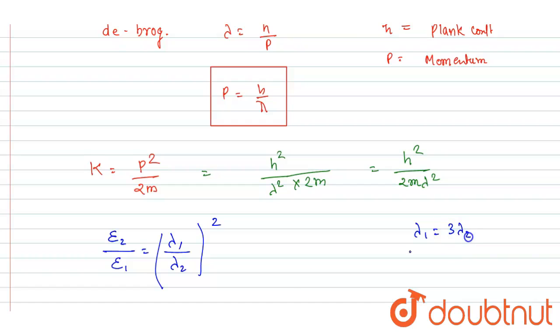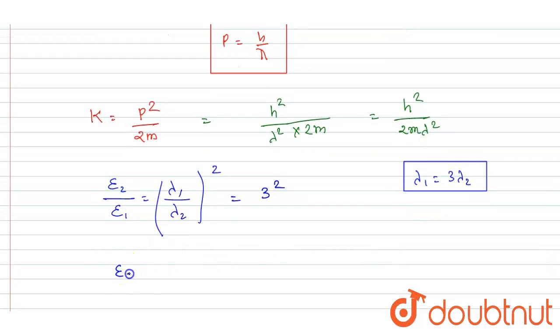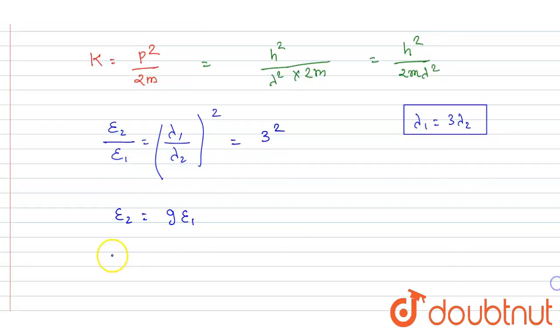So we know that λ1 is equals to 3 times λ2. So if I put the value, it will be equals to 3 squared. So I will write E2 equals 9E1.